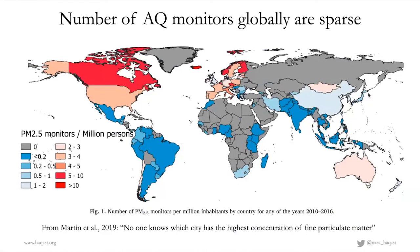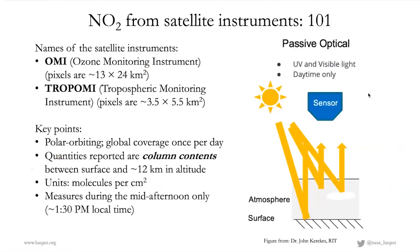Briefly, how is NO2 measured from satellite? Two instruments are relevant here: OMI, the Ozone Monitoring Instrument, with pixels approximately 13 by 24 square kilometers, launched in 2004; and TROPOMI, launched in 2017, with much smaller pixels but a shorter record. Both are polar-orbiting with global coverage once per day — a single snapshot, but everywhere over the globe. The values reported are column contents — the amount of NO2 between the surface and approximately 12 kilometers altitude in the troposphere — in units of molecules per centimeter squared. Both have a mid-afternoon overpass.